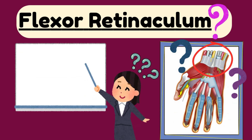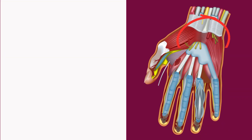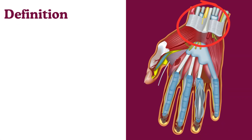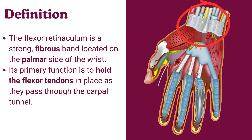In this video we will talk about the anatomy of the flexor retinaculum, also known as carpal tunnel of hand. The flexor retinaculum is a strong fibrous band located on the palmar side of the wrist. Its primary function is to hold the flexor tendons in place as they pass through the carpal tunnel.